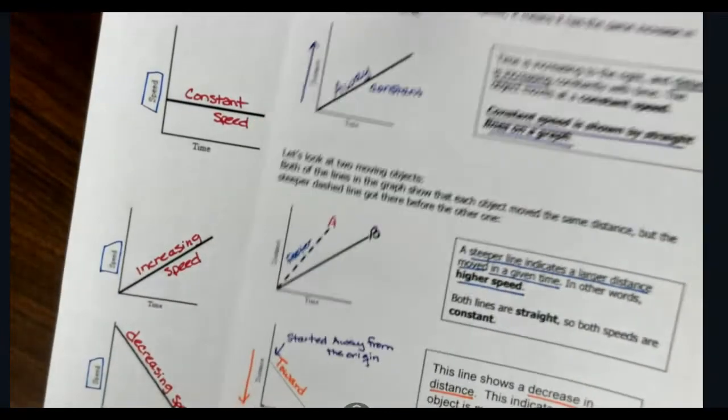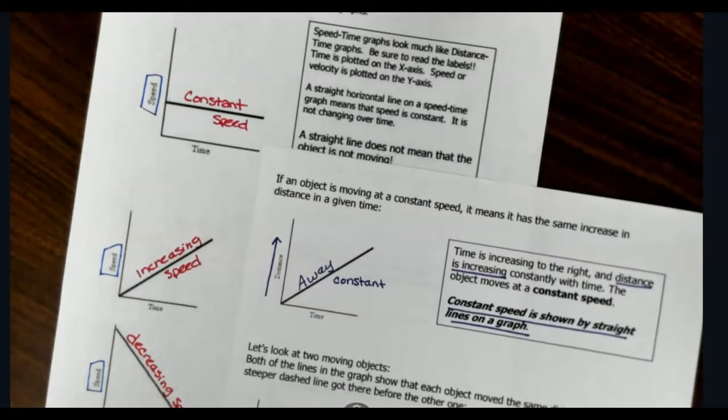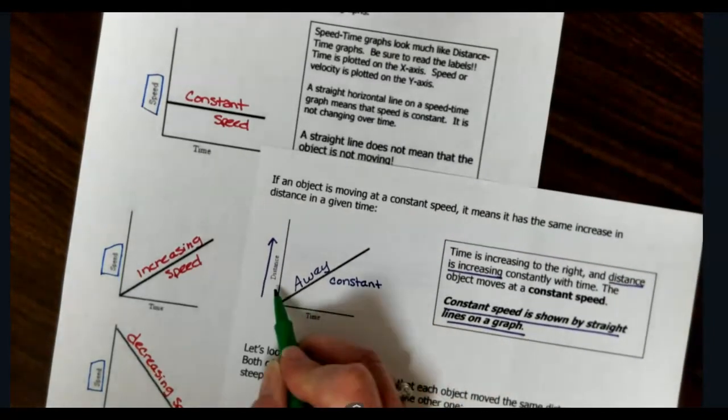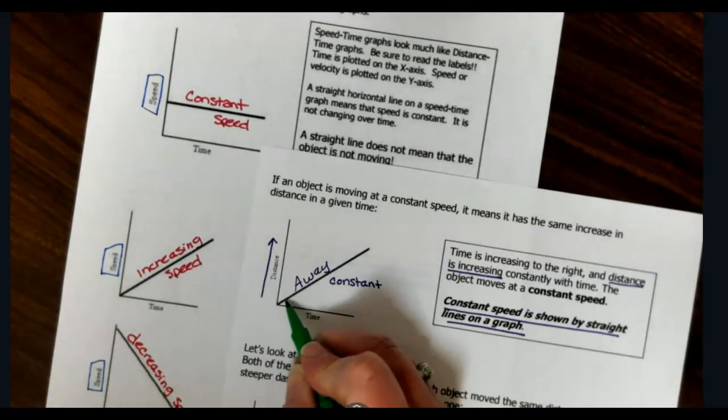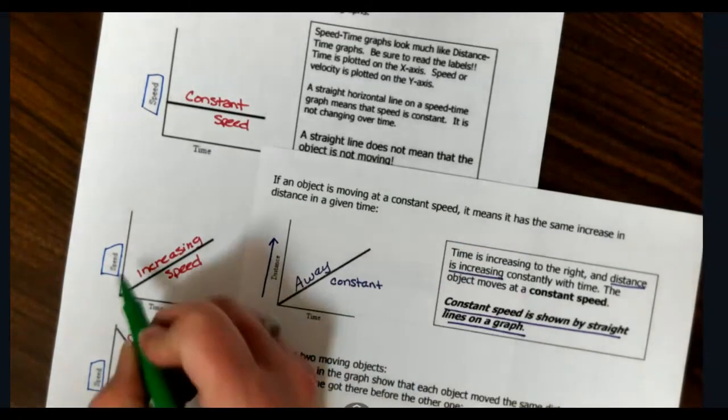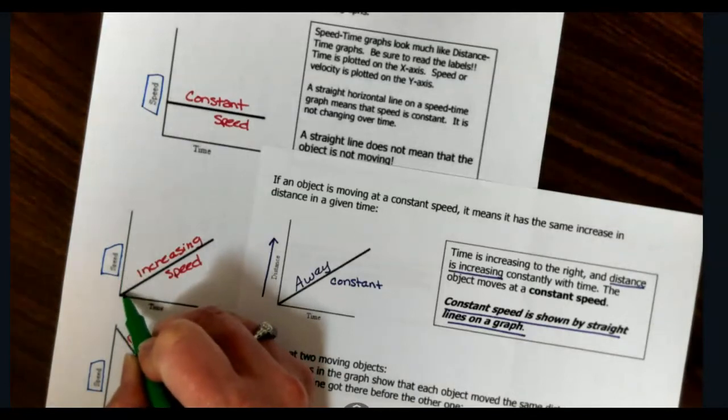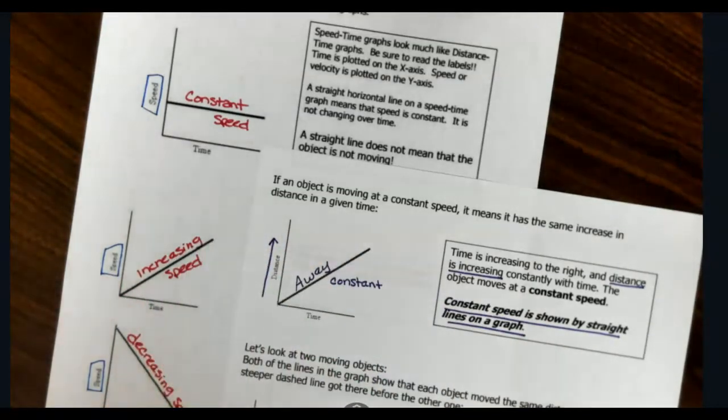And the next one, if we look again, in this graph, it's a distance time graph. Distance is increasing, so the object is moving away. In my speed graph, speed is increasing, so it is accelerating.